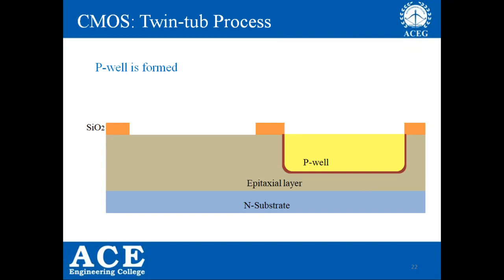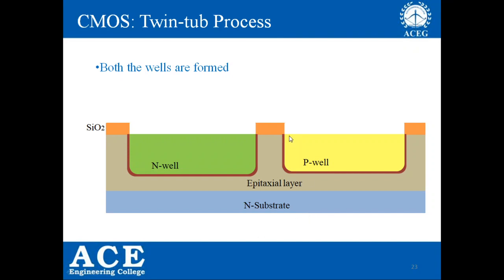Doping is of two types: diffusion and ion implantation. We are going through diffusion here. Similarly, the N-well is also formed: we keep a mask over the P-well region and dope the N-well area with N-type impurities. Now both N-well and P-well are formed. In this N-well, we will fabricate one P-MOS transistor, and in this P-well, we will fabricate one N-MOS transistor.